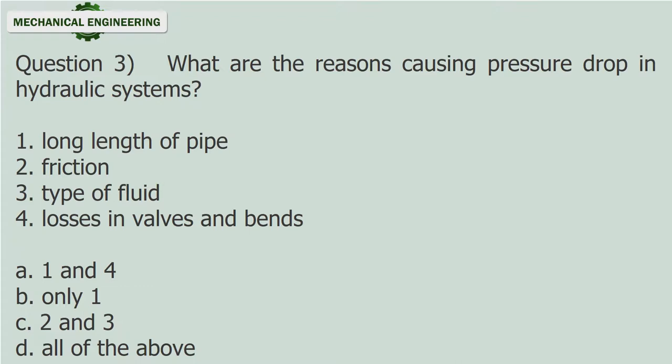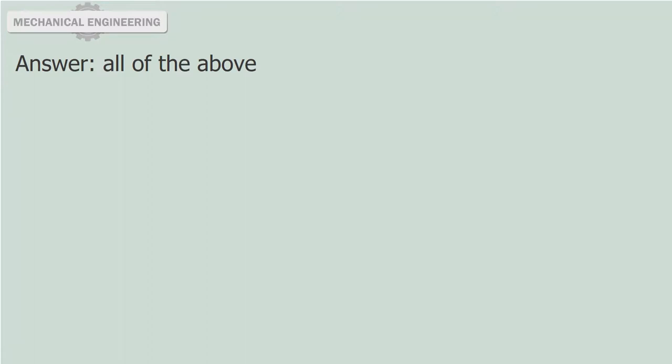Question 3: What are the reasons causing pressure drop in hydraulic systems? 1) long length of pipe, 2) friction, 3) type of fluid, 4) losses in valves and vents. Options: A) 1 and 4, B) only 1, C) 2 and 3, D) all of the above. Answer: All of the above.